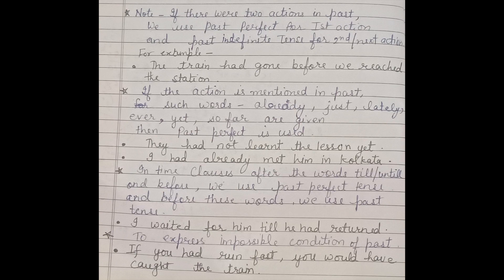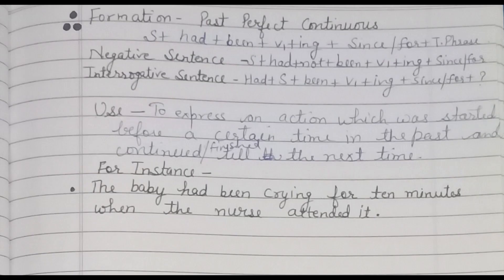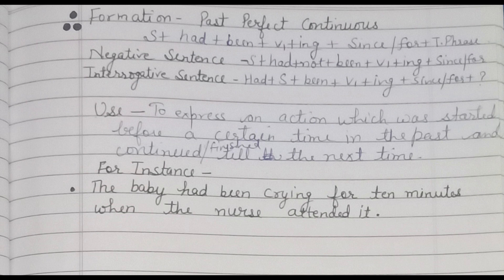Our last tense is past perfect continuous. Its formation is subject plus had plus been plus V1 plus -ing plus since/for plus time phrase. In negative sentences: subject plus had plus not plus been plus V1 plus -ing plus since/for. In interrogative sentences: had plus subject plus been plus V1 plus -ing plus since/for plus time phrase plus question mark. In interrogative sentences, we always use a question mark.